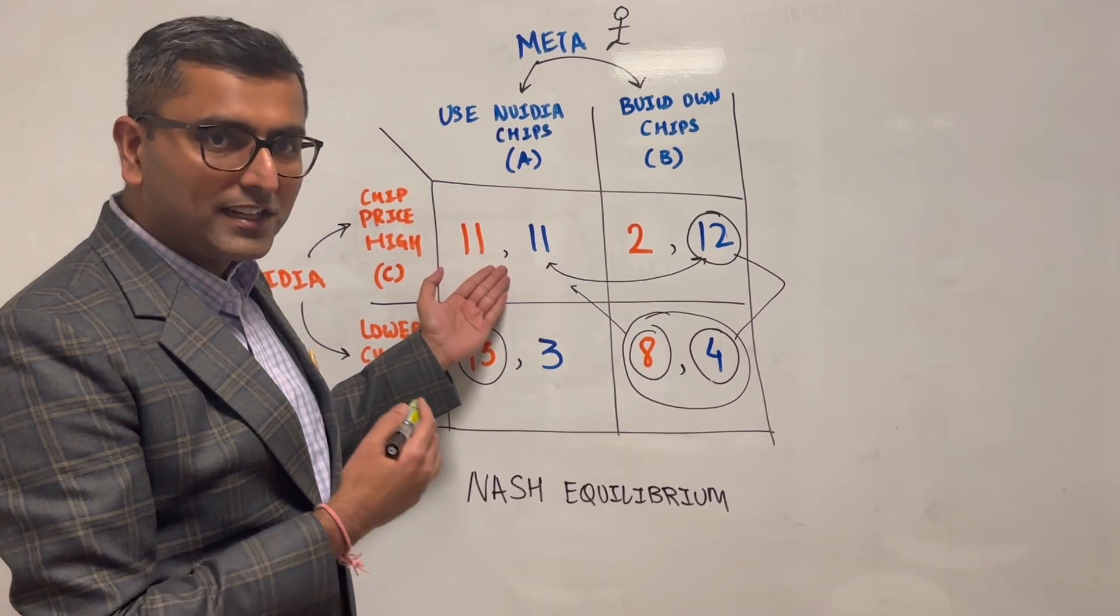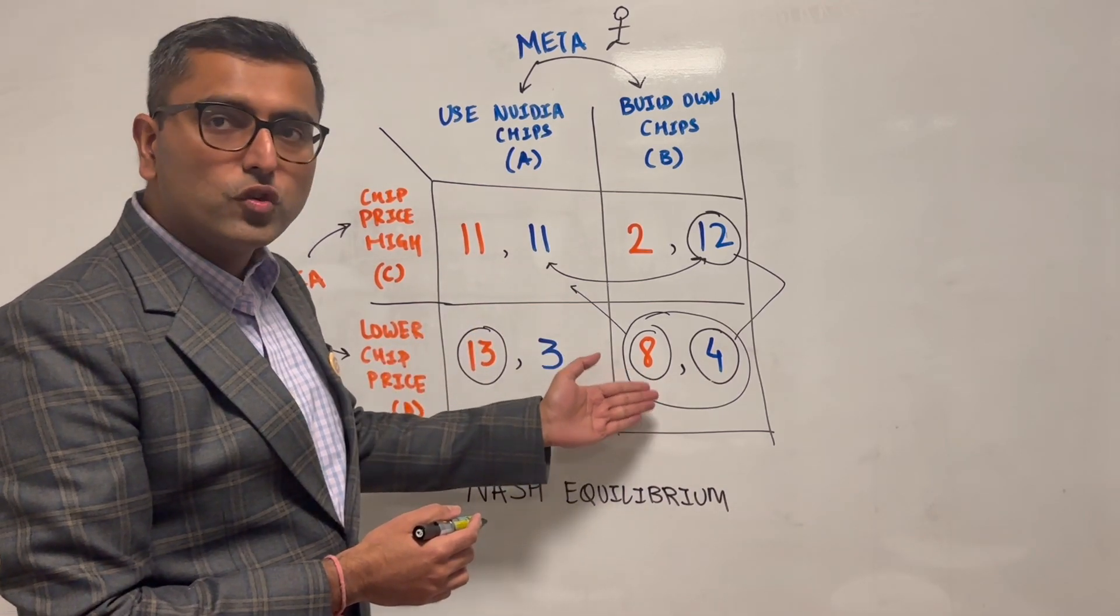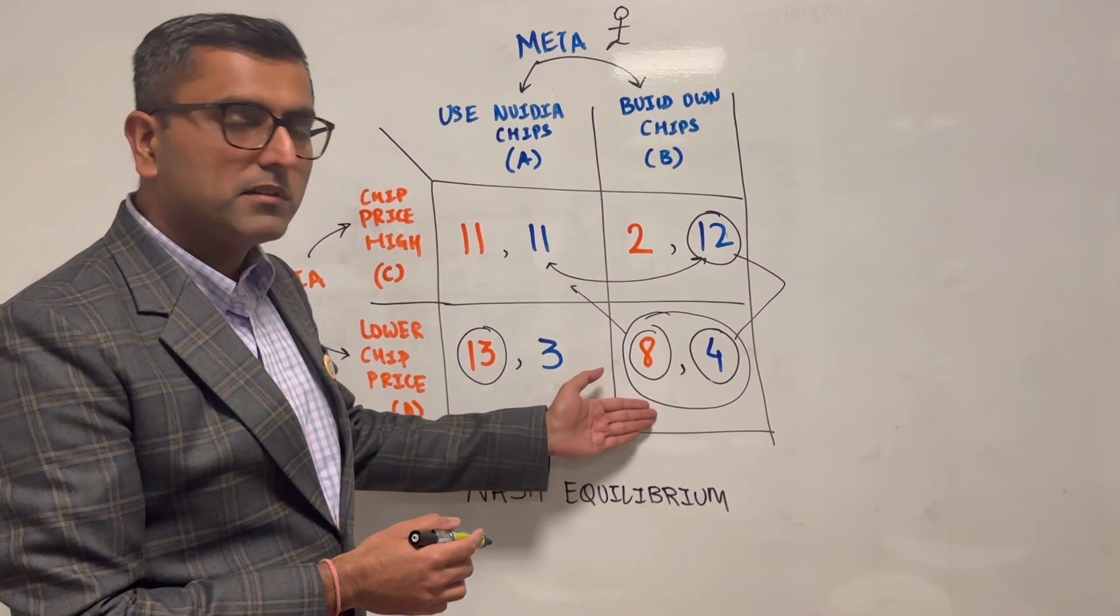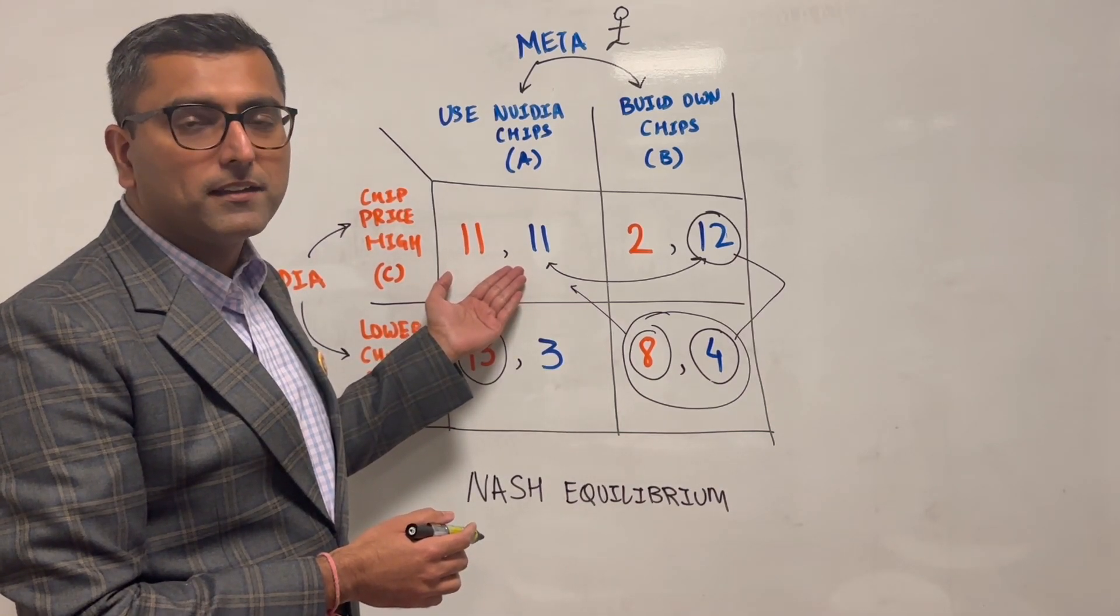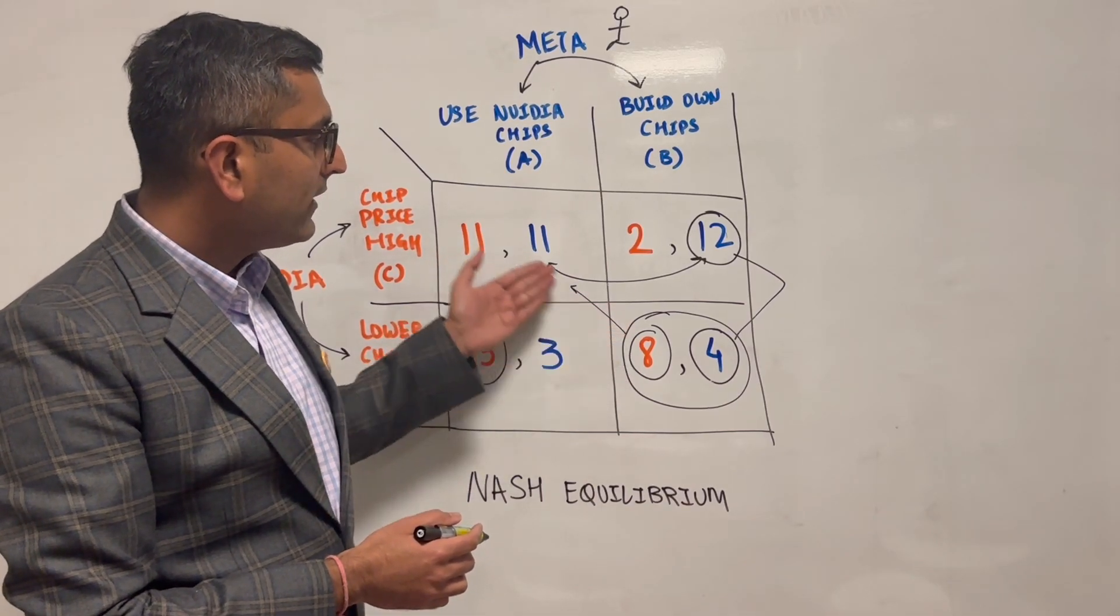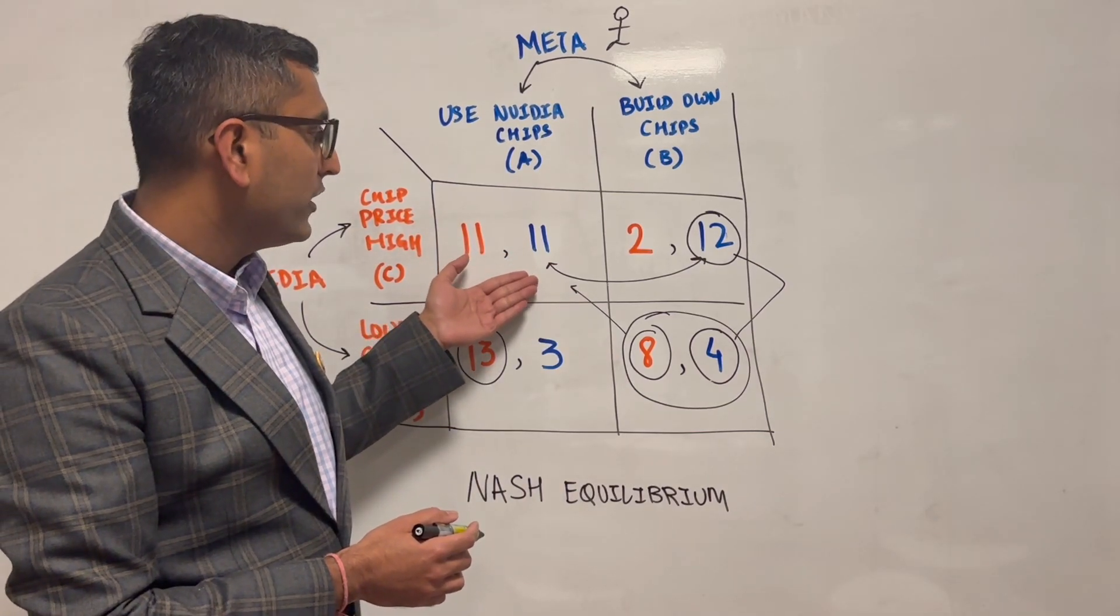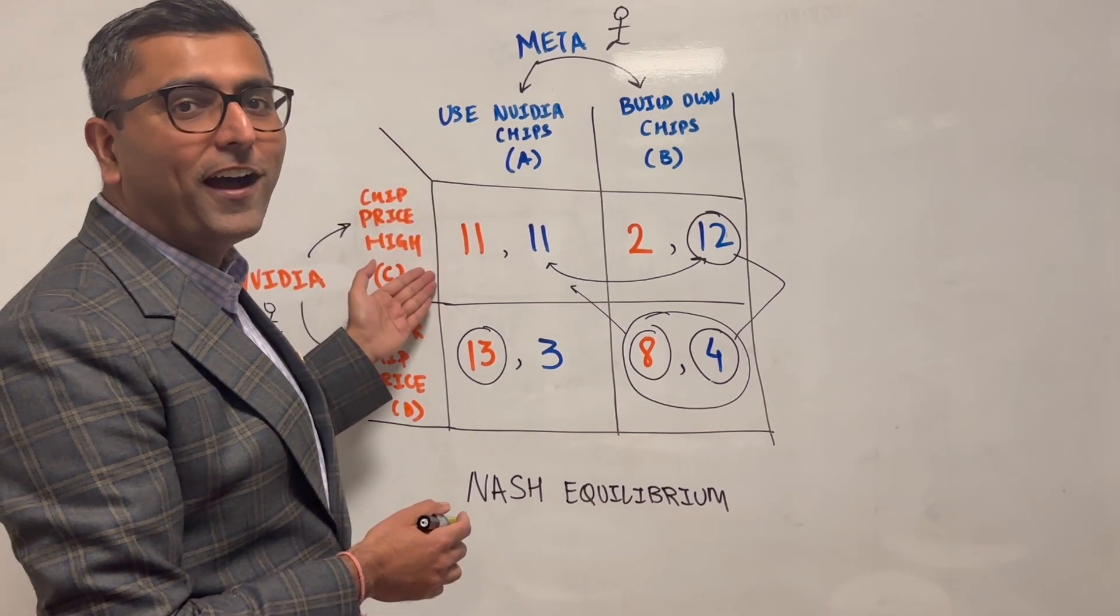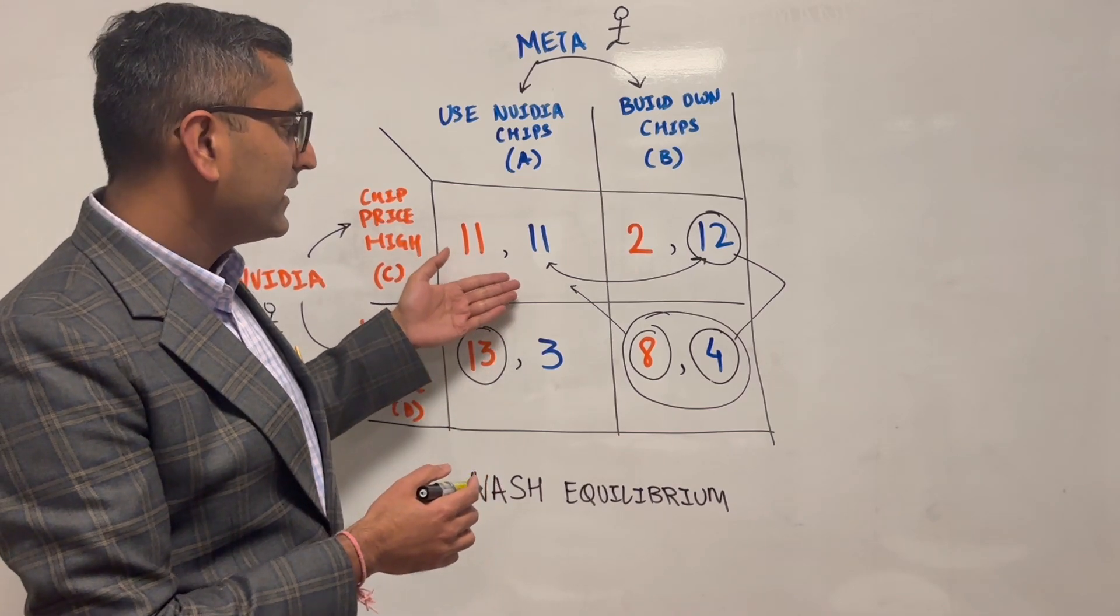Meaning they both would choose this and they cannot change their decision because it's an equilibrium decision, even though they know they could both be making much higher payoffs and it's a win-win. So for this, you can't collude. You cannot share that we both would win if we, you don't do this, you use my chips, I keep charging you high, and we both have a better payoff, because that would be collusion.